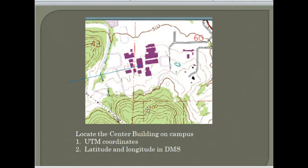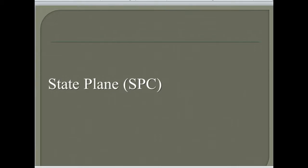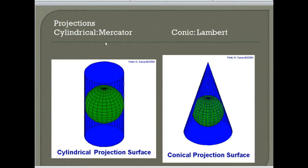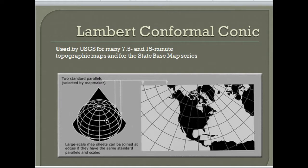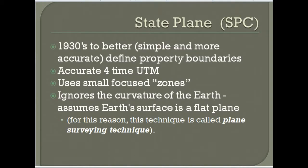The state plane coordinate system uses some Mercator projections but also a different type called conic projections. A Mercator projection is cylindrical, while Lambert is a conic projection. These are ways the curved surface of the Earth can be drawn on a flat surface with less distortion, depending on the shape of the area being mapped. With a conic projection, there are two standard parallels where the map is most accurate. We'll cover projections in more depth next week.